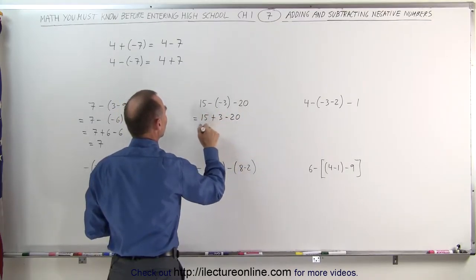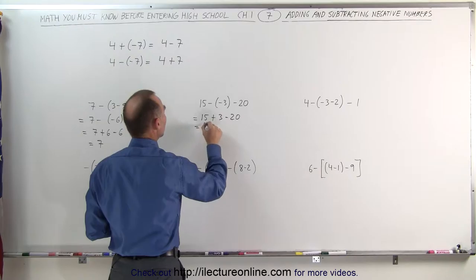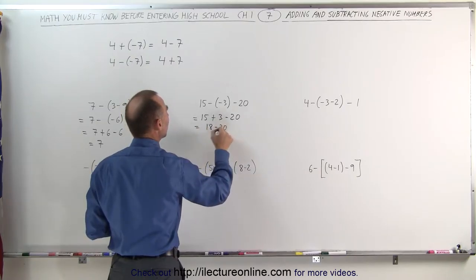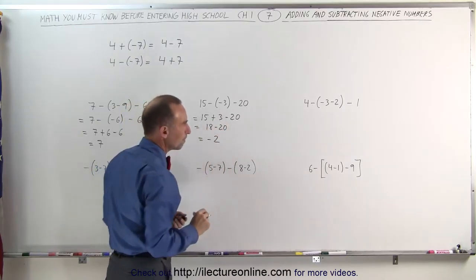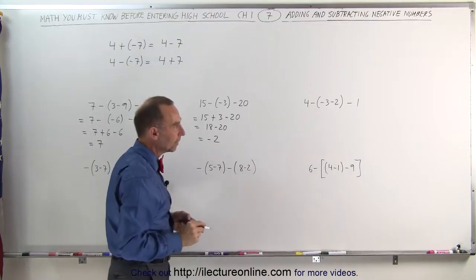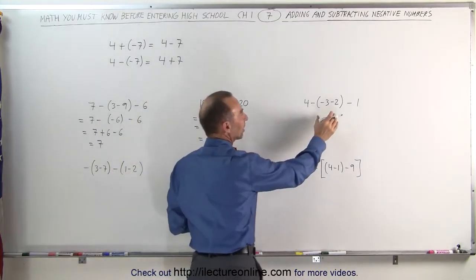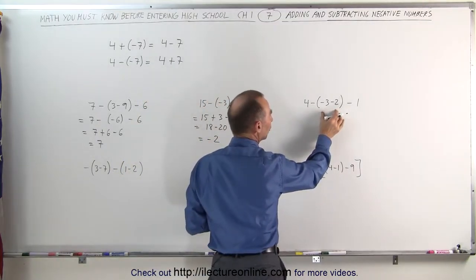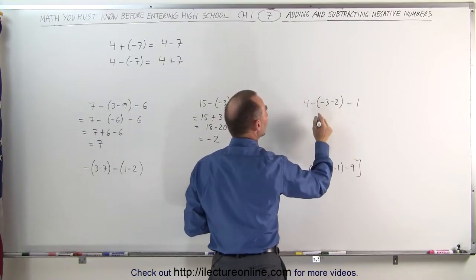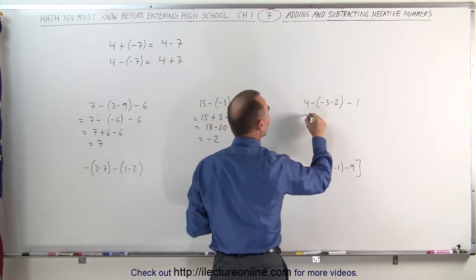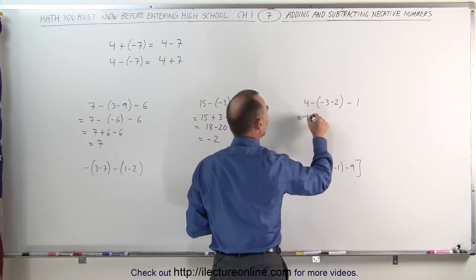Here we do the same thing. We're subtracting a negative number — that's the same as adding the opposite, or the positive number. This then becomes 15 plus 3 minus 20. 15 plus 3 is 18, so we get 18 minus 20, and 18 minus 20 is minus 2.